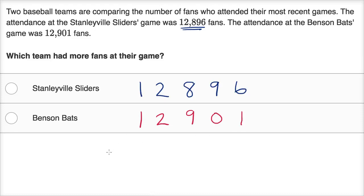The way I like to compare numbers is I go to the largest place value first and I compare. They both have one 10,000, so they have the same number of 10,000s. They have the same number of thousands. But then when we get to hundreds, Benson Bats has more hundreds than Stanleyville Sliders.